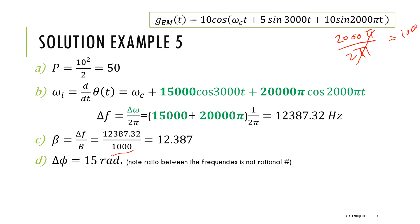For the phase deviation, we do not differentiate — we find the maximum of the phase angle directly. The phase angle contains a sum of two sine terms. Since the ratio of the two frequencies is irrational (one involves π, the other does not), at some instant in time the two will simultaneously peak. Therefore the maximum phase deviation is 5 + 10 = 15 radians.